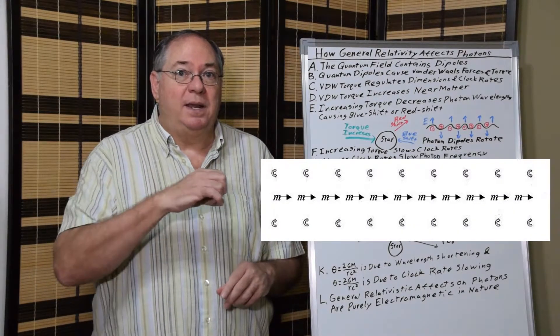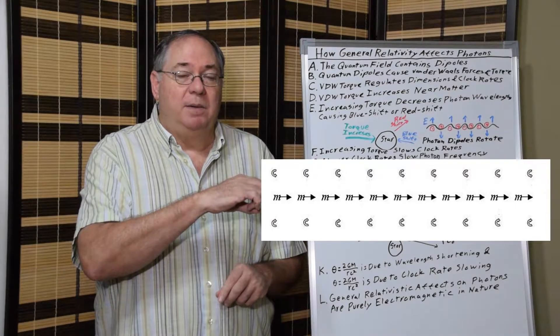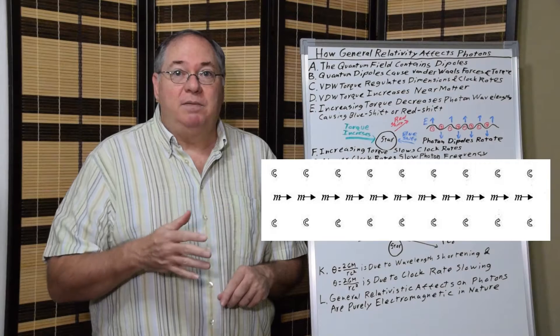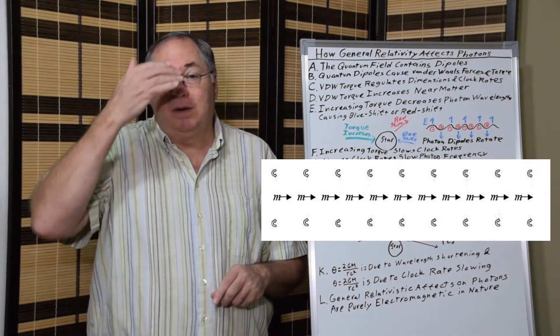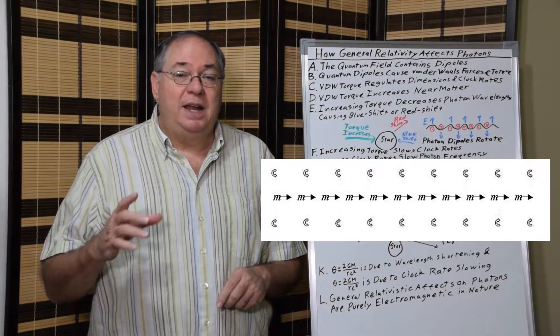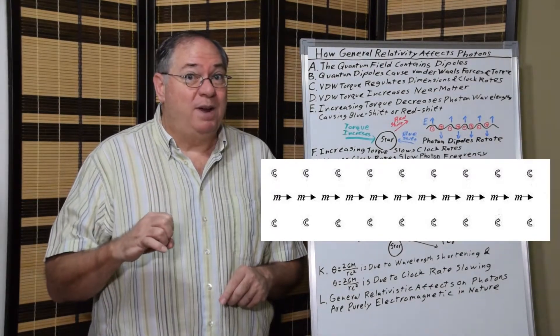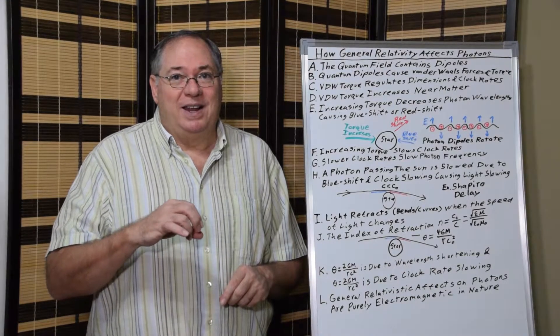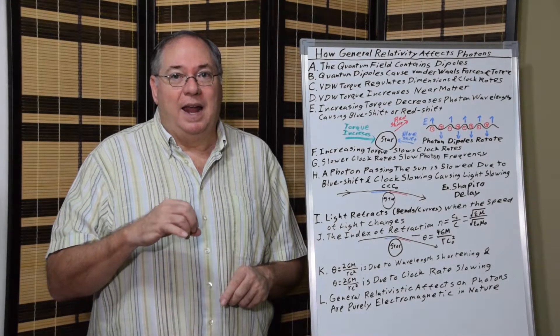When an electrically neutral body moves through space, it's limited by the speed of light. The speed of light squared is related to the permittivity and permeability.